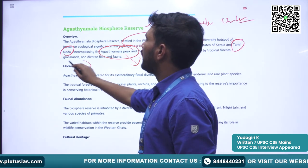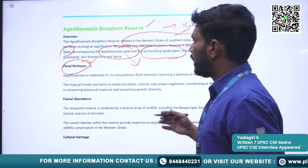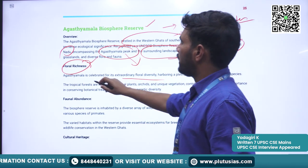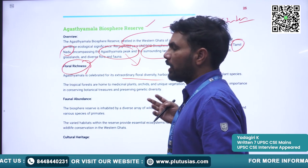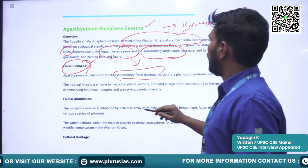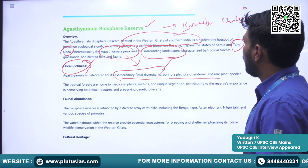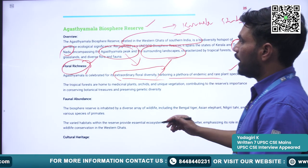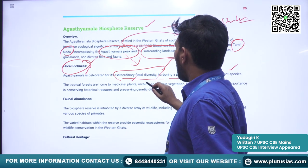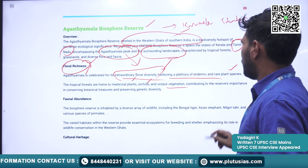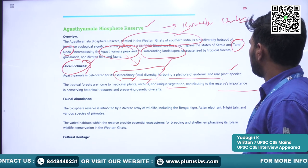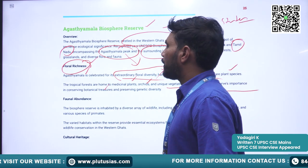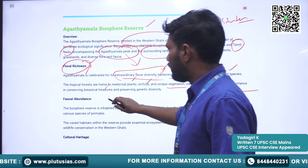It is home to a variety of floral richness. The Agasthyamalai Biosphere Reserve is known for its extraordinary floral diversity, harboring a plethora of endemic and rare plant species, including medicinal plants, orchids, and unique vegetation contributing to the reserve's importance in conserving botanical treasures.